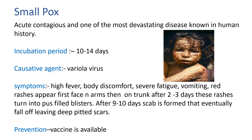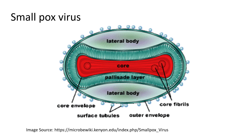Now, smallpox. This is an acute, contagious, and one of the most devastating diseases known in human history. Incubation period is 10 to 14 days. The causative agent is Variola virus. Symptoms are high fever, body discomfort, severe fatigue, and vomiting. First, red rashes appear on the face and arms, then on the trunk. After 2 to 3 days these rashes turn into pus-filled blisters. After 9 to 10 days a scab is formed that eventually falls off, leaving deep pitted scars. Prevention: a vaccine is available, and with the help of WHO's extensive vaccination program, this disease was completely eradicated from planet Earth in 1980. This is the diagram of the smallpox virus.